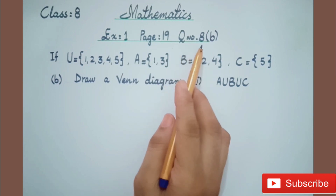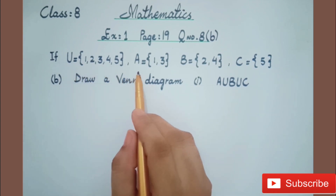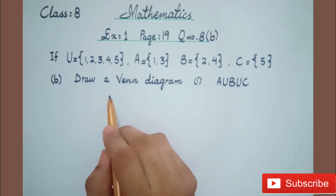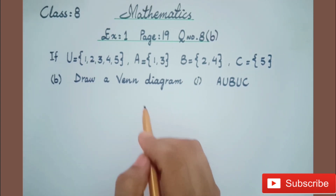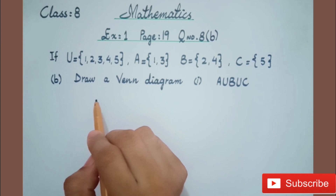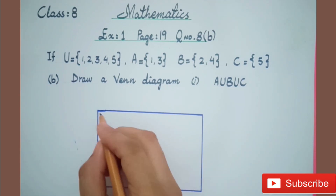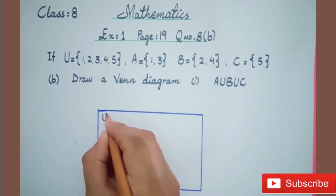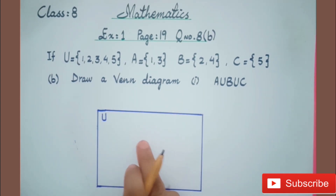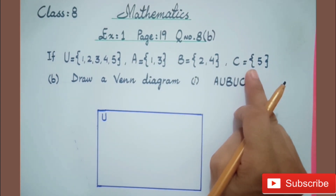Now we will solve question number 8B of exercise 1, page number 19. In this question we have a universal set, set A, set B, and set C, and the question is to draw a Venn diagram. In the diagram we use a rectangle shape for the universal set — we draw a rectangle and write U to represent the universal set. Inside this universal set, our subsets A, B, and C are represented using circle shapes.